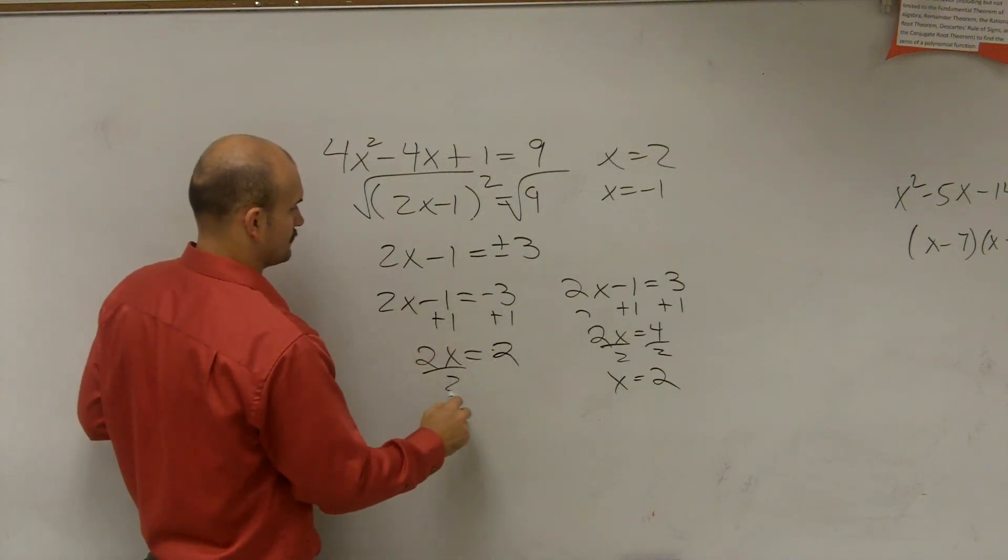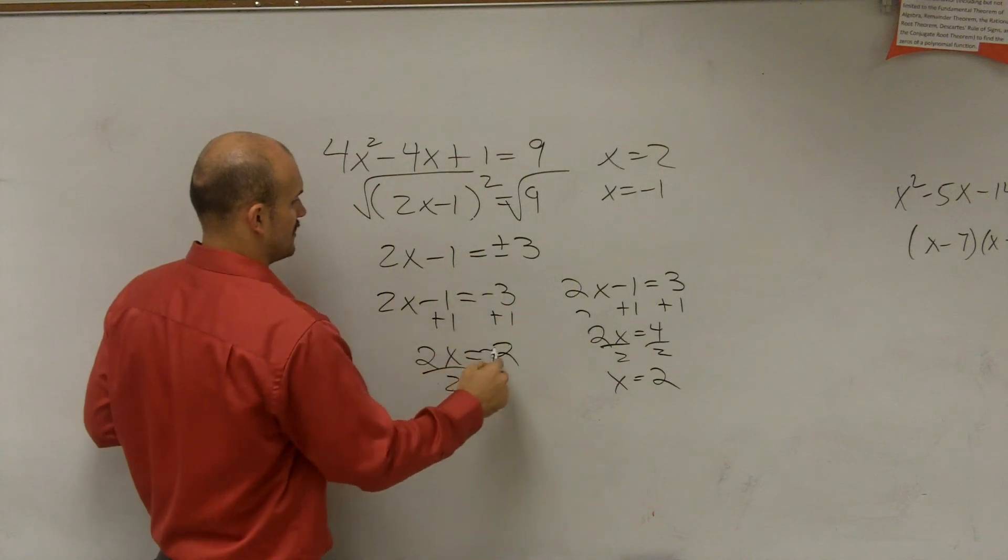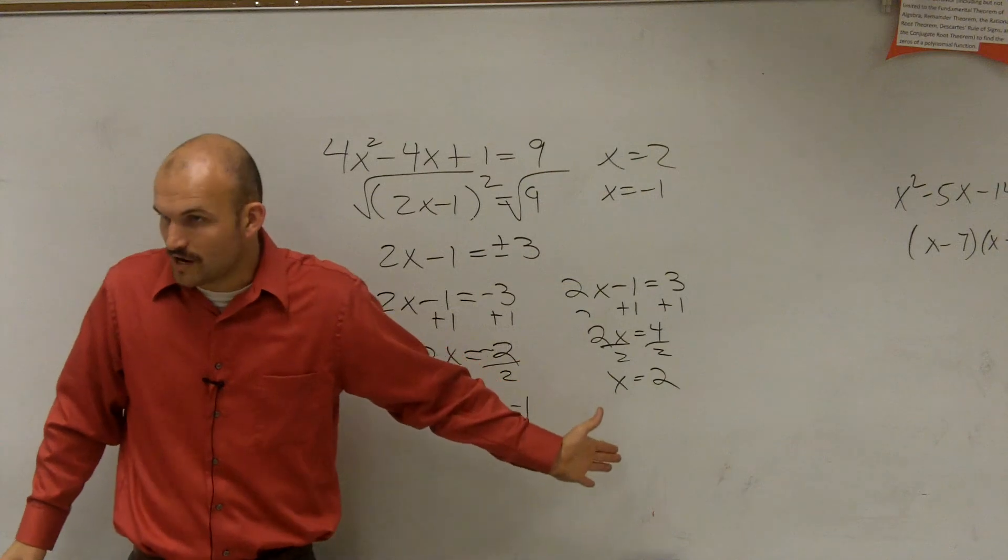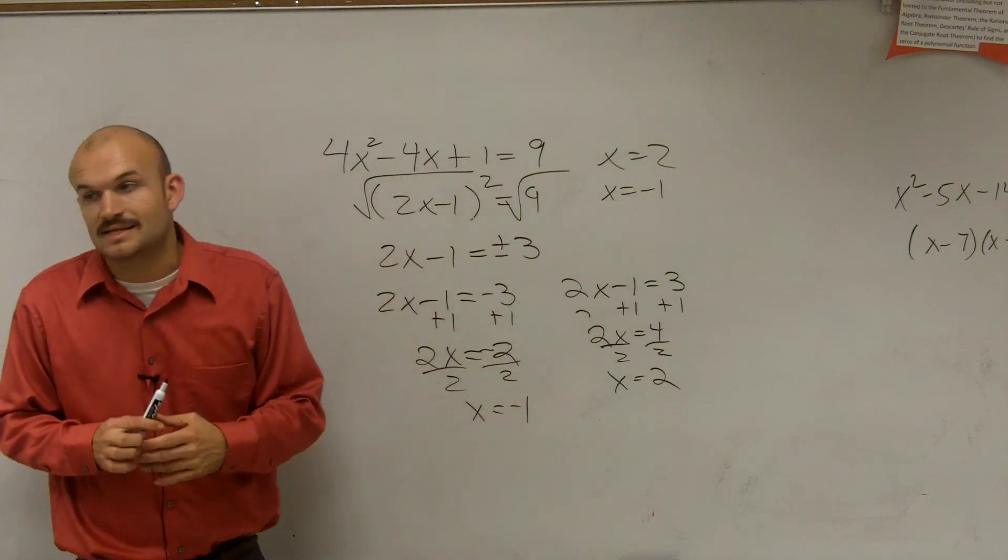Well, I tried to do both in there. Negative 2. OK? So by doing it by the square root method, you guys notice I get the exact same answers.